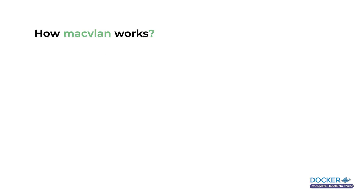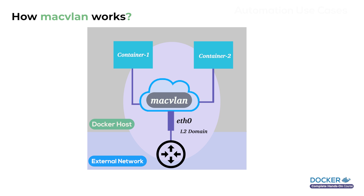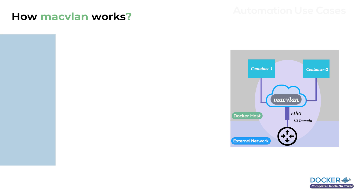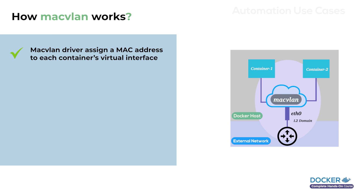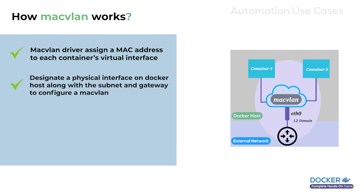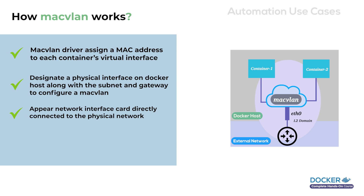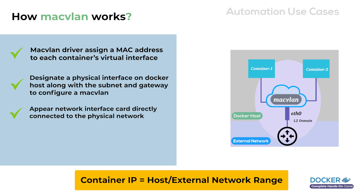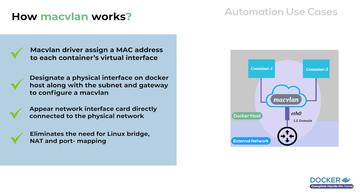So how does it work? In simple terms, using MacVLAN network, each container can be accessible from the external network. When we set up a Docker network with a MacVLAN driver, it assigns a unique MAC address to the virtual interface of the container. Then we designate the physical interface on the Docker host with a MacVLAN driver along with the subnet and gateway. Behind the scenes, this makes a Docker container's network card part of the host network broadcast domain and connects directly to the physical network. Containers would get an IP address from the same range as the Docker host and external router, essentially reducing the need for a Docker bridge, NAT, and port mapping.